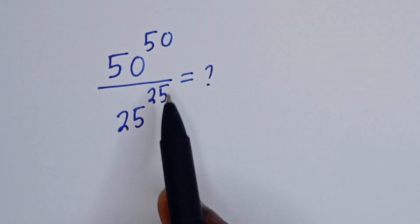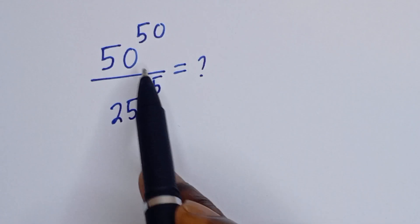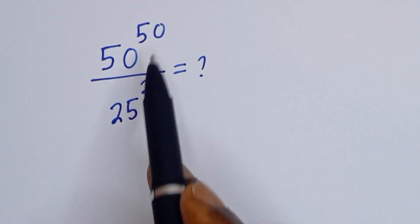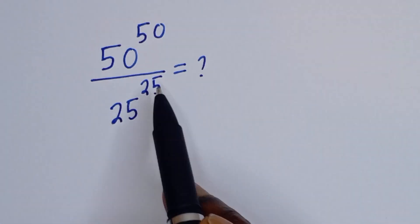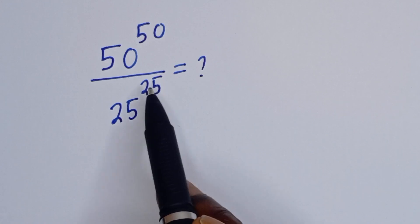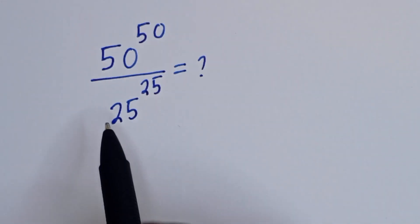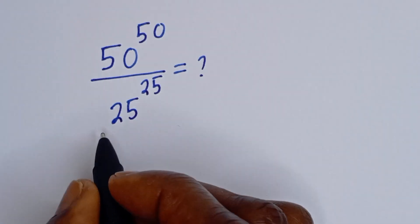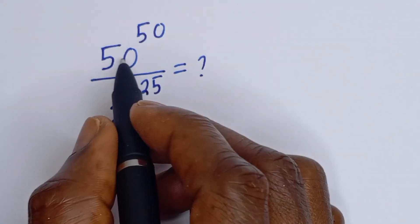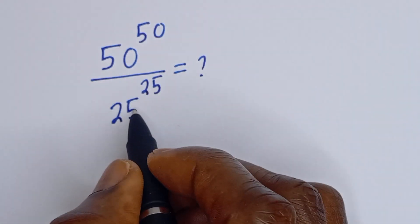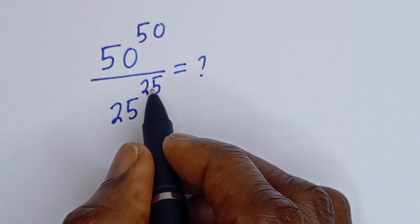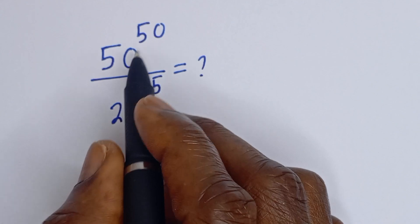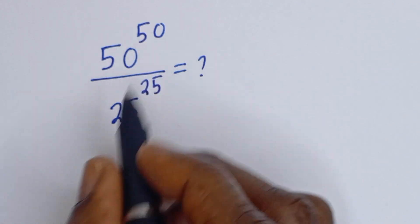Hello! How to simplify this nice math problem: 50 to the power of 50 divided by 25 to the power of 25, without using a calculator. So here we have 25 to the power of 25 and here is 50 to the power of 50.